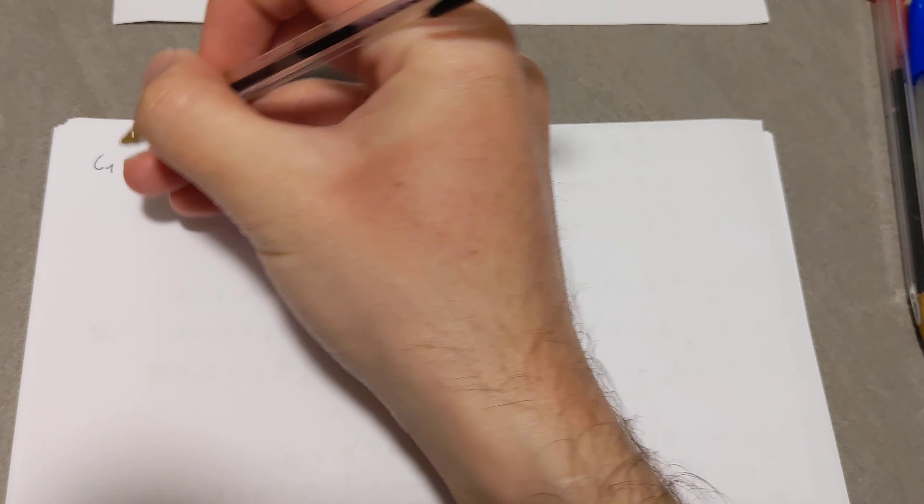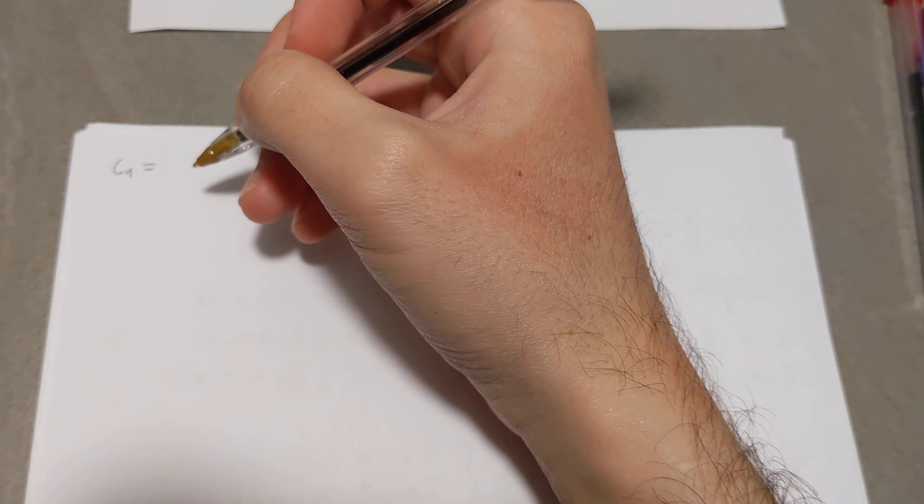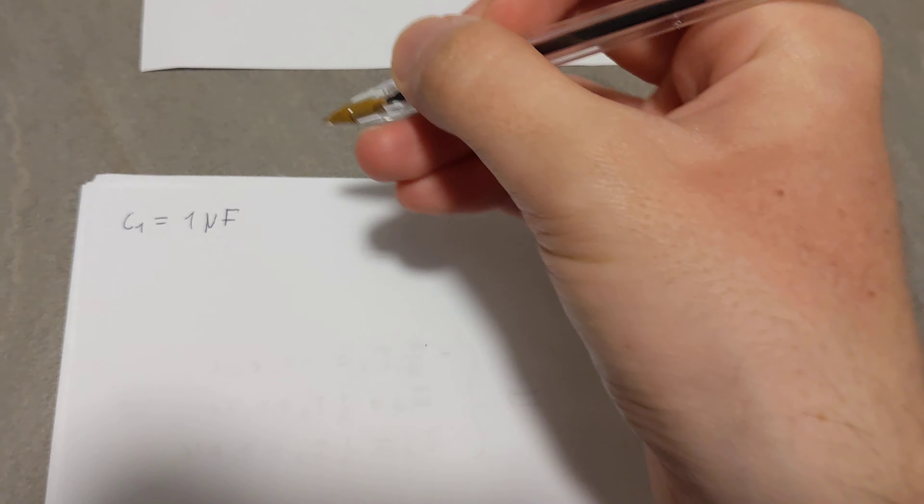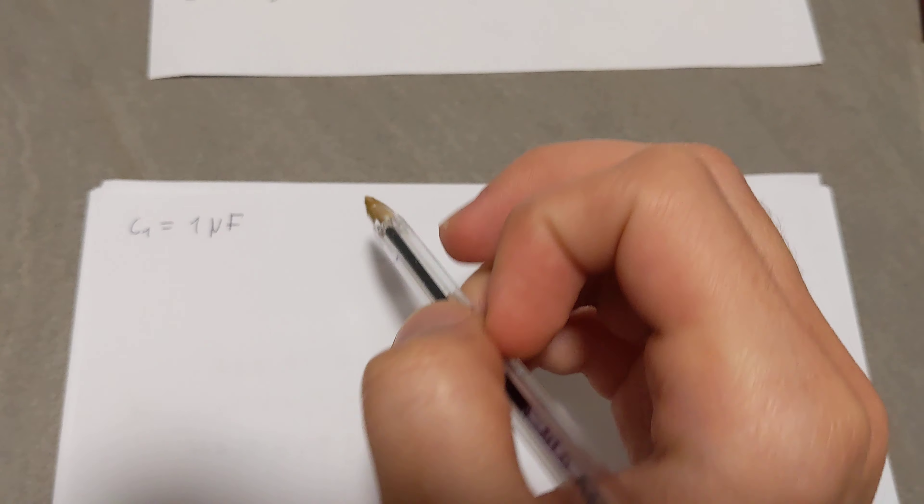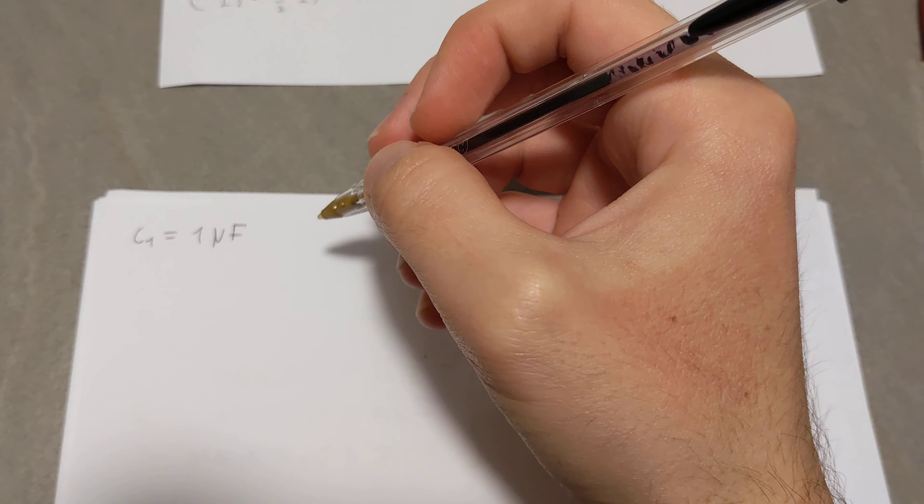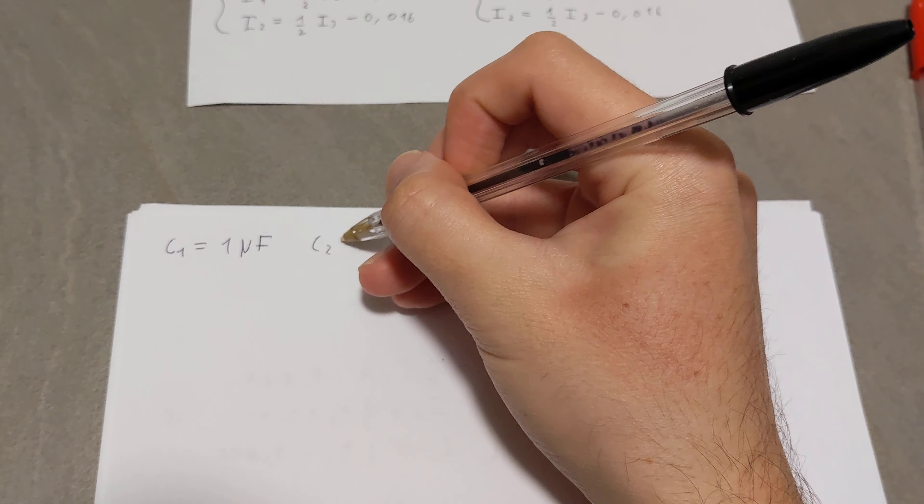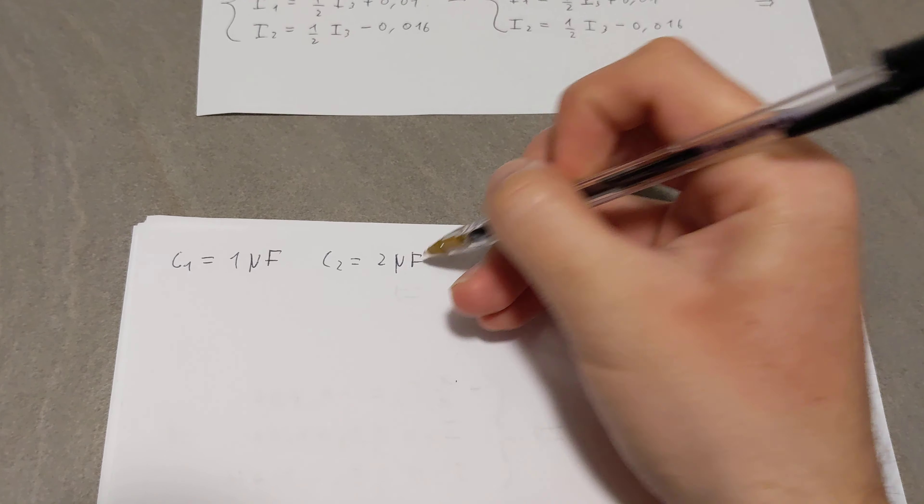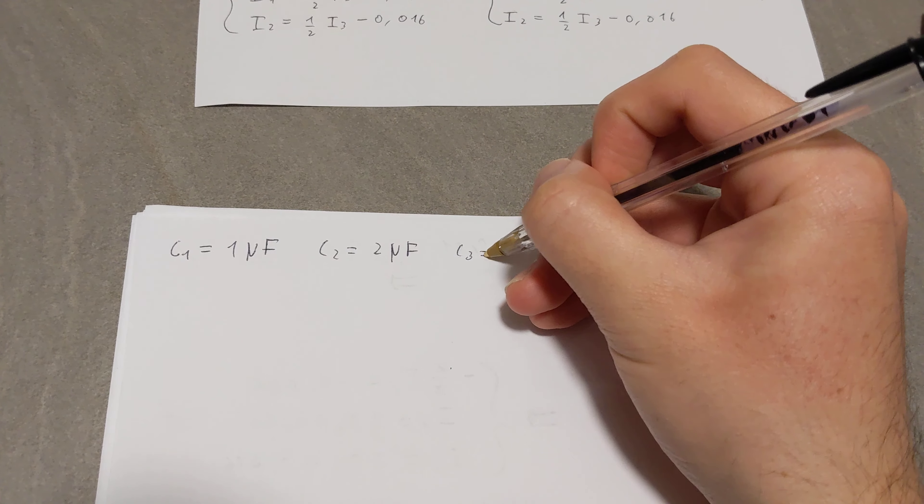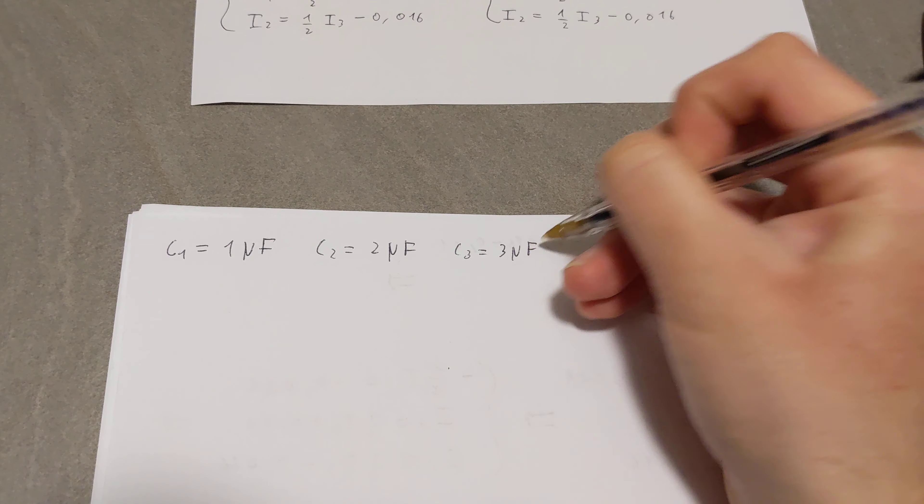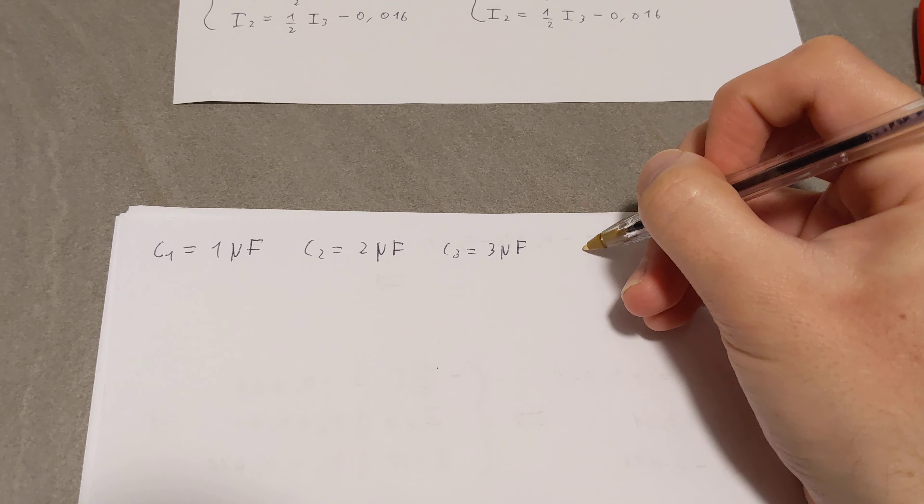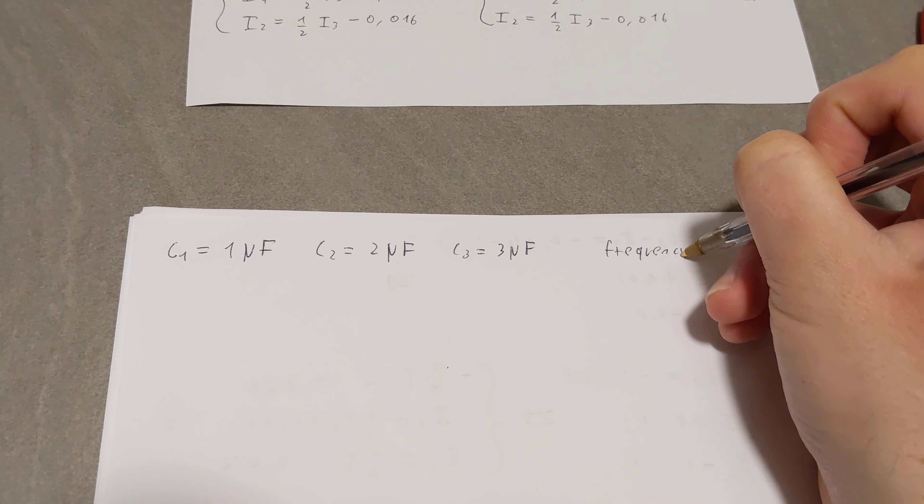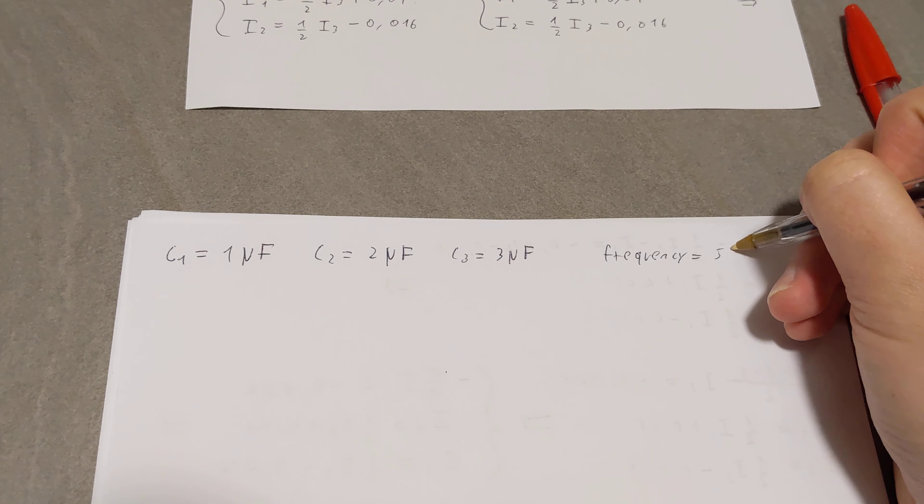So the C1, our first capacitor is 1, and it is a farad. And C2 is 2. And C3 is 3. And they are all at the frequency of 50 kilohertz.